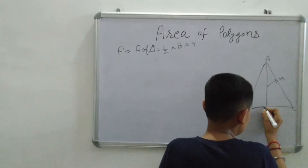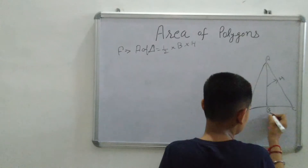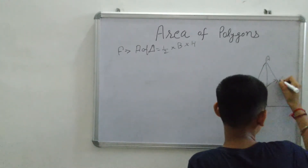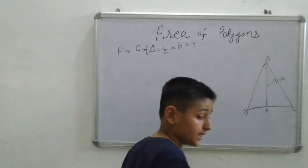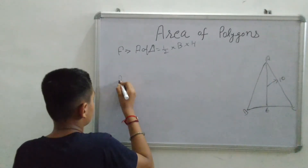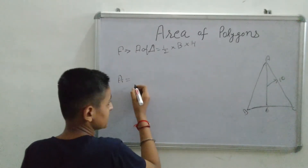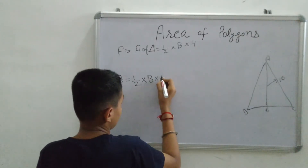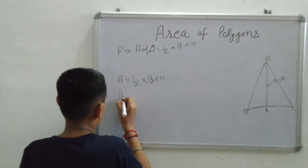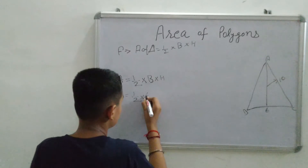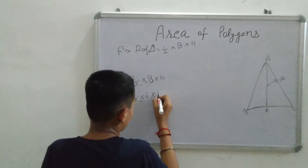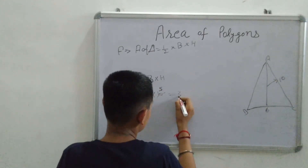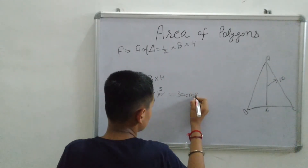The triangle has point A, point B, and point C. This is the base of the triangle. Suppose the height is 10 centimeters and the base is 6 centimeters. Area equals one by two multiplied by base multiplied by height: 1/2 multiplied by 6 multiplied by 10 equals 30 centimeter square.